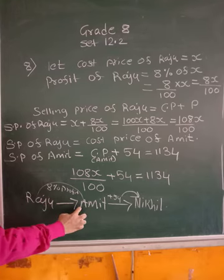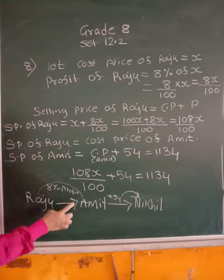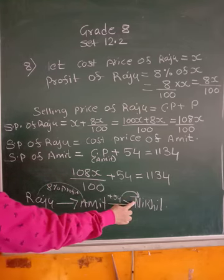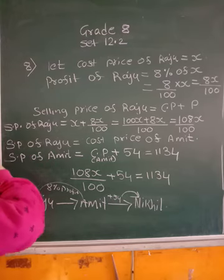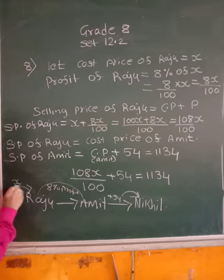So selling price of Amit is equal to cost price of Nikhil. Now see, you understand. We have to find out for how much rupees Raju has bought it. So I have supposed to be that X. Let the cost price of Raju be X.